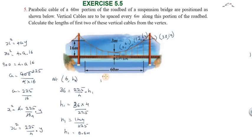So the first cable length equals 3 plus h1, which is 3 plus 0.64, giving us a total of 3.64 meters.